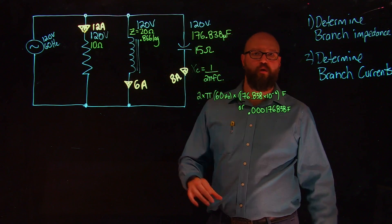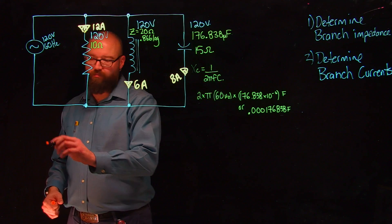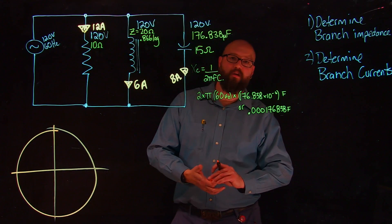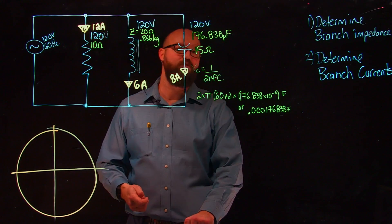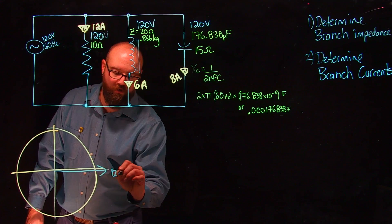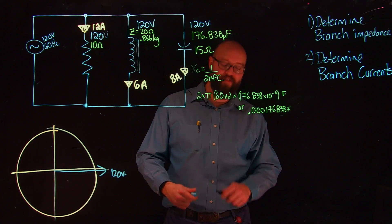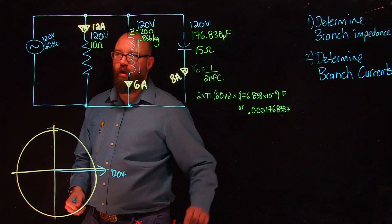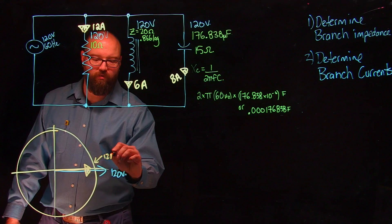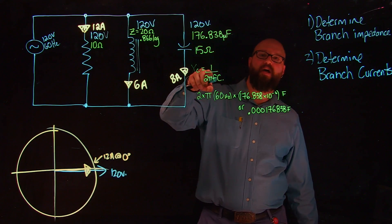Because it's a parallel circuit, the same voltage is applied everywhere, so we're going to use voltage as our reference. We know we have our 120 volts as our reference. For our resistive load, current is in phase with voltage, so we plot 12 amps at zero degrees, since it's in phase with our voltage.